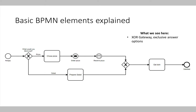The first gateway we see here is an XOR gateway — an exclusive OR gateway. Our process starts with being hungry, arrives at the gateway, and at the gateway there is a question: what would you like to eat? If we decide to eat pizza, the process takes the upper path — we choose a pizza, order it, receive it, eat the dish, and our hunger is satisfied. If we instead opt for a healthier option like a salad, we prepare a salad, eat it, and the process ends with a satisfied end event. So an XOR gateway enables us to choose either one or another process path.